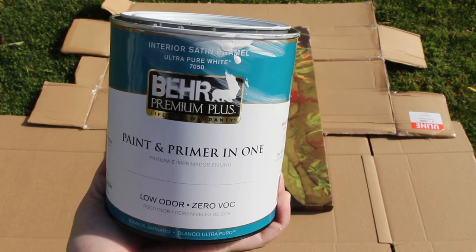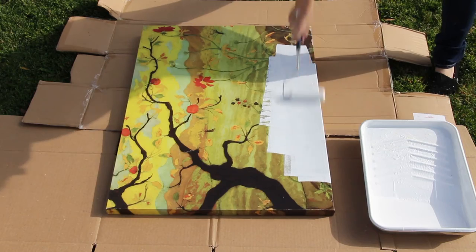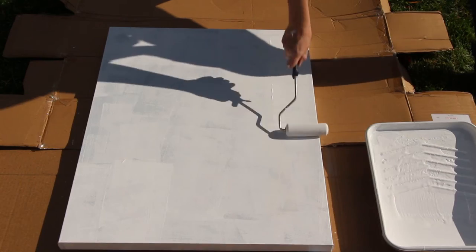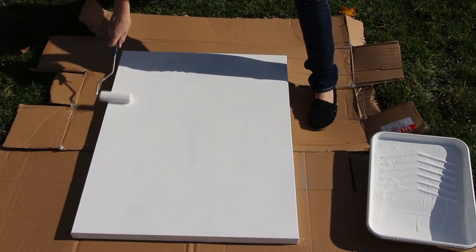Let's go ahead and get started. I'm using this paint and primer in one with a satin finish in white, and it's an interior paint. I'm using a roller to apply the paint and primer, and I ended up needing three coats to completely cover the previous print on the canvas.